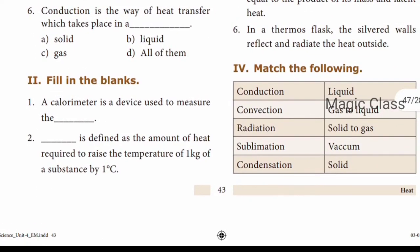Next, fill in the blanks. Question number one: A calorimeter is a device used to measure the dash heat capacity of a liquid. Question number two: Dash is defined as the amount of heat required to raise the temperature of one kilogram of a substance by one degree Celsius.